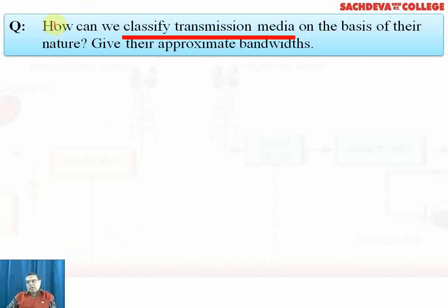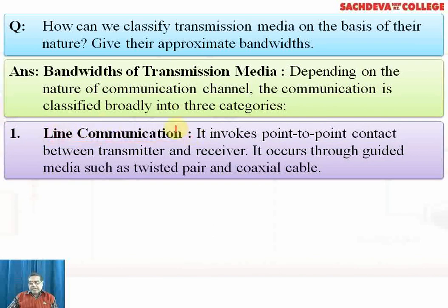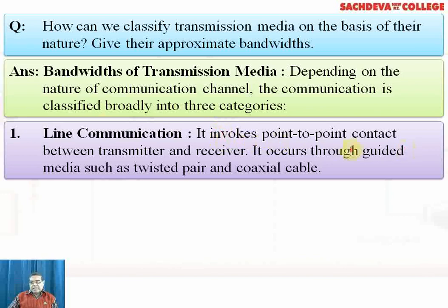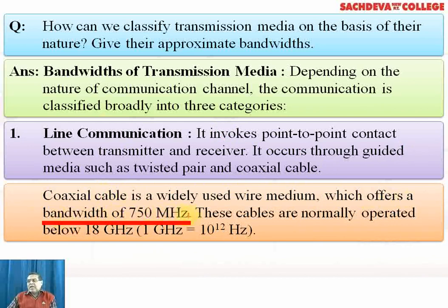Transmission media are classified broadly into three categories based on their nature and bandwidths. The first is line communication — point-to-point contact between transmitter and receiver through guided media such as twisted pair and coaxial cable. Coaxial cable is a widely used wire medium with a common axis, offering a bandwidth of 750 megahertz, normally operated between 1 gigahertz (10^9 Hz) and 18 gigahertz.